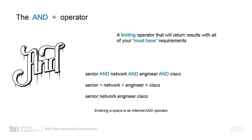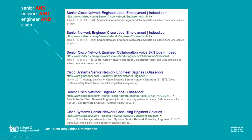The AND operator: anytime you type words into a search engine — for example, typing 'local movie theater to see the Lego movie' with no ANDs, no ORs — it will read all the spaces as an automatic AND. You can write AND, use the plus button, or just use spaces. All three are acceptable. For example, searching senior AND network AND engineer AND Cisco brings back focused results.